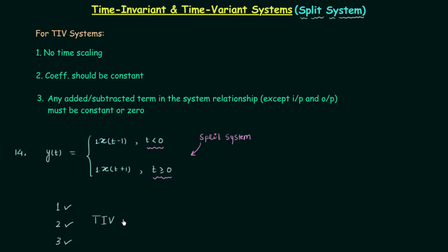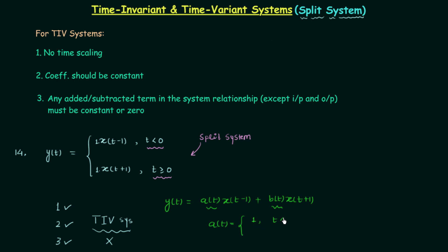However, that answer is incorrect. The system is not time invariant — it is time variant. To explain why, we can rewrite the system relationship in another form: y(t) = a(t)·x(t−1) + b(t)·x(t+1), where a(t) is defined as 1 when t < 0 and 0 when t ≥ 0, and b(t) is defined as 0 when t < 0 and 1 when t ≥ 0. If you compare the two representations, you will find they are equivalent.